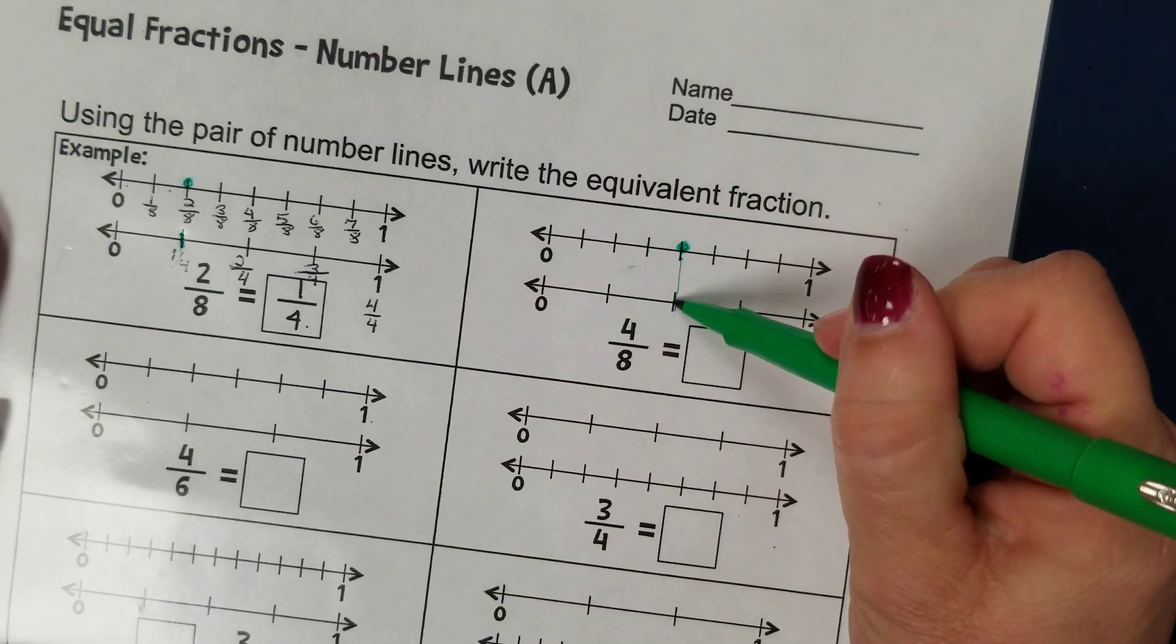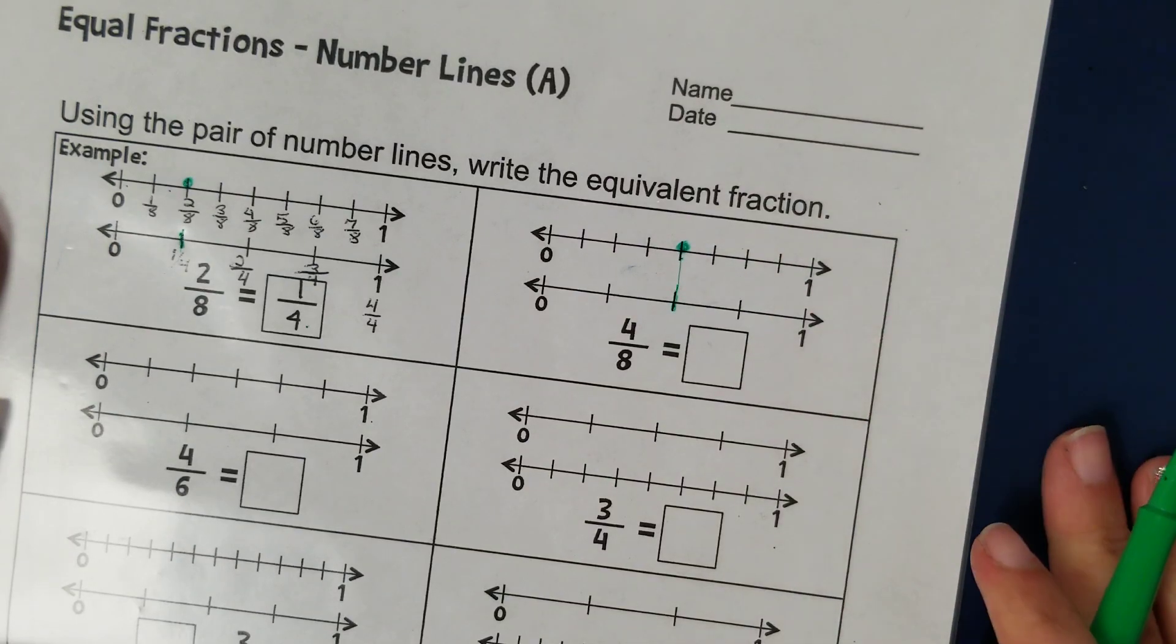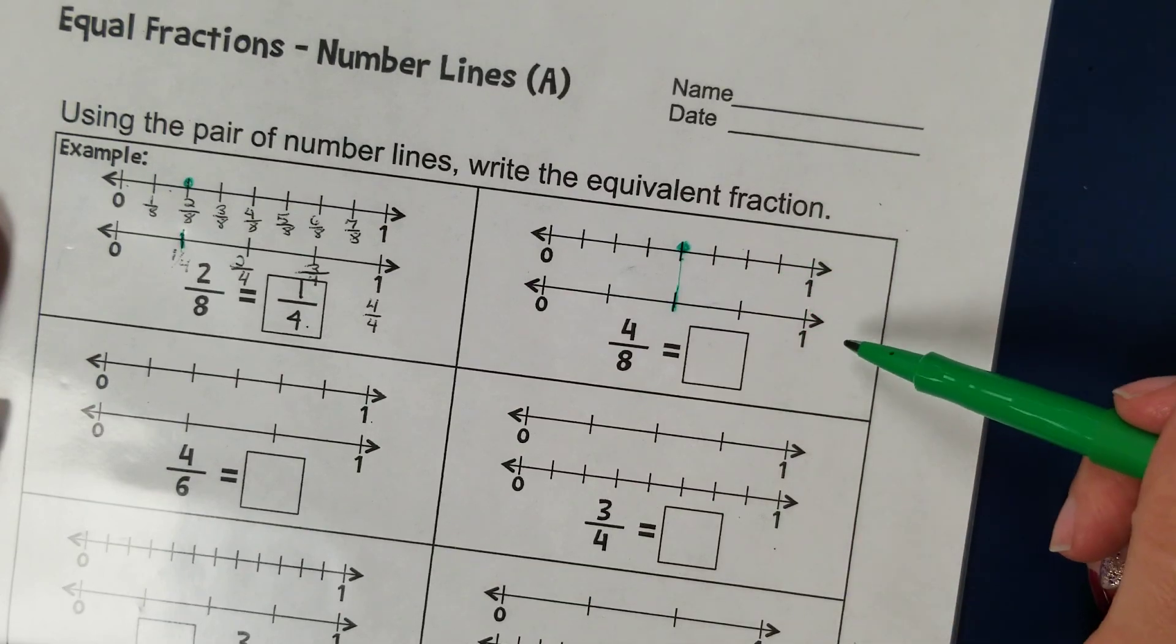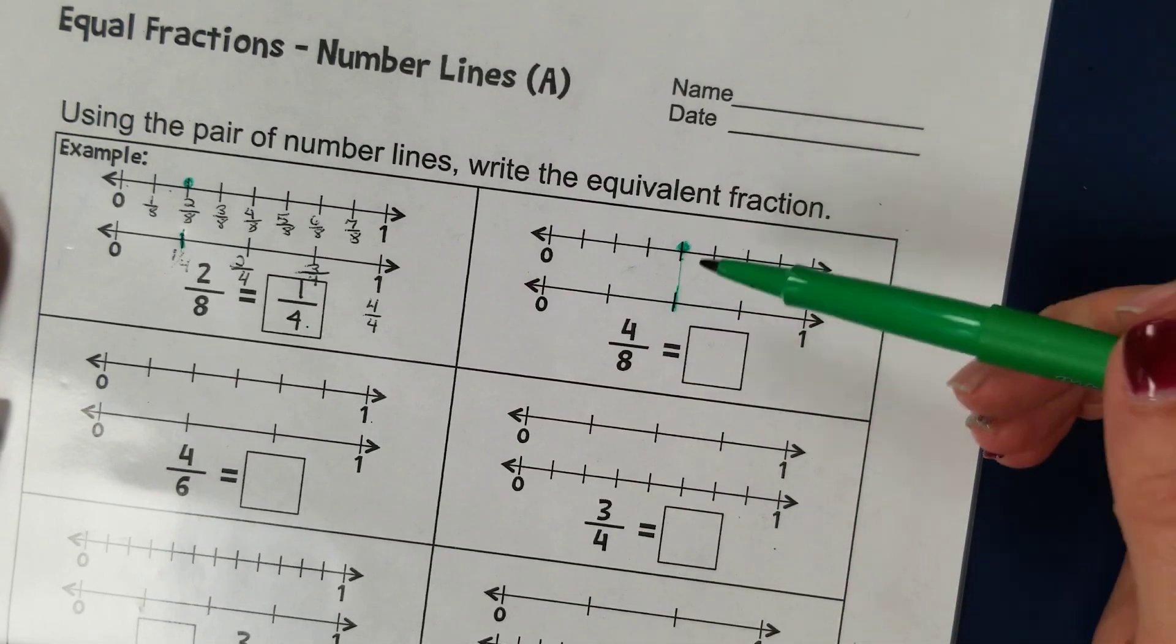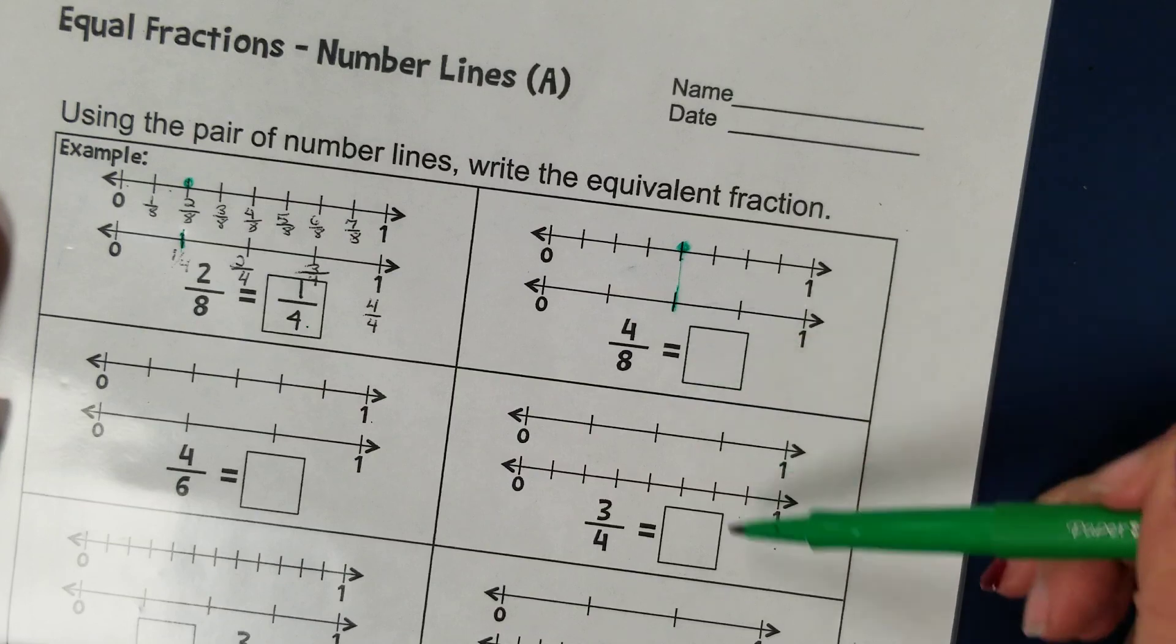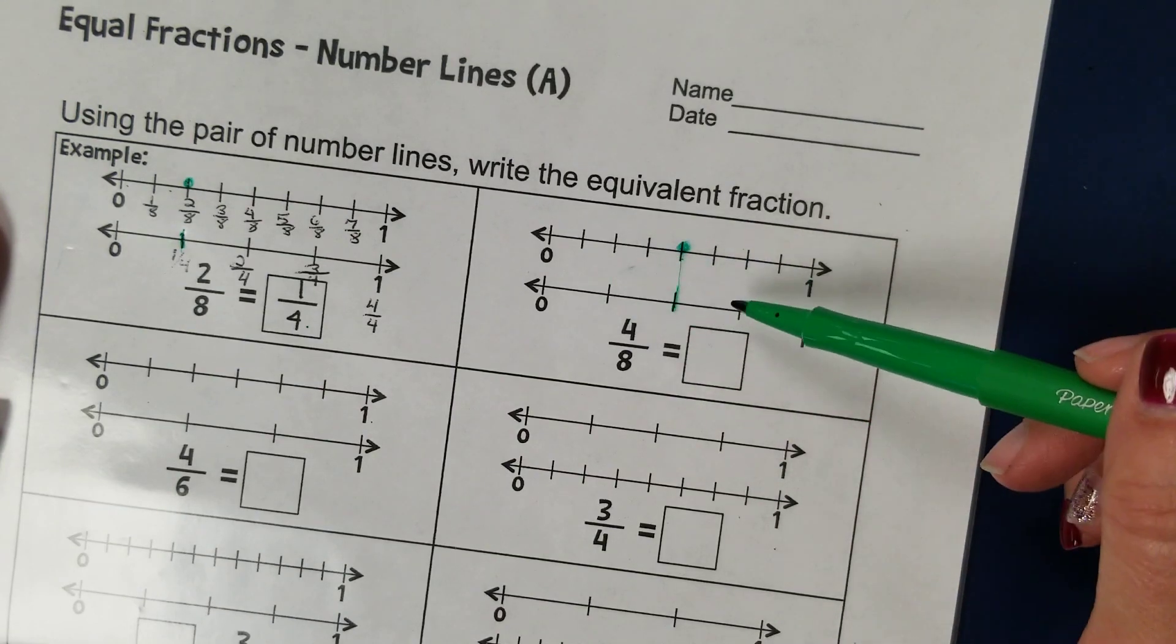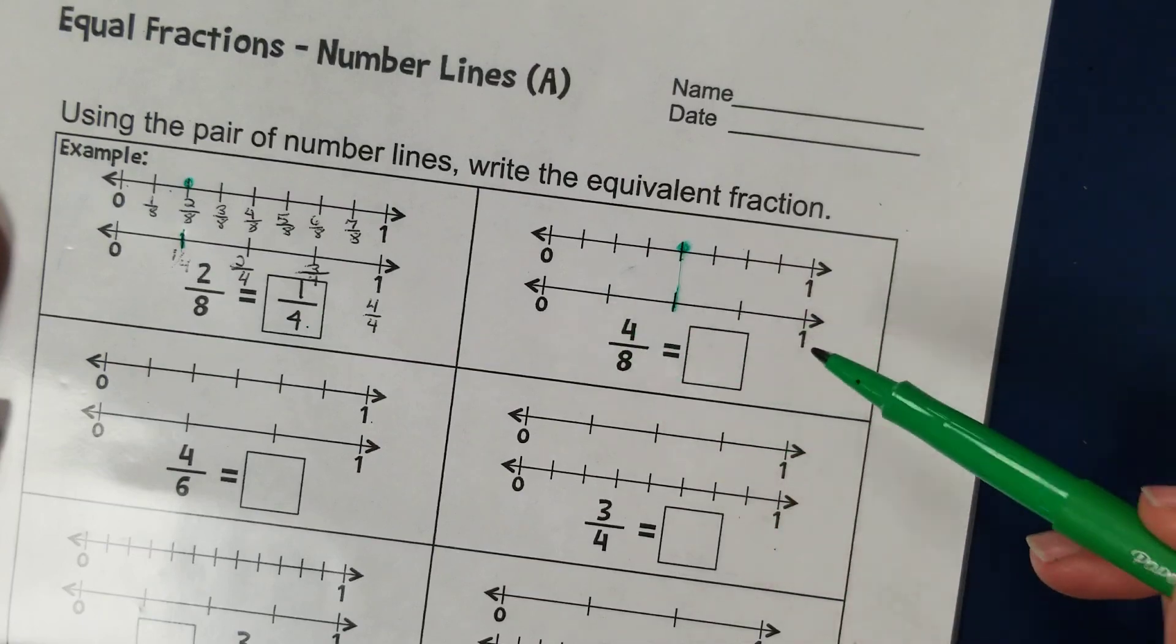So if I look down, I see that this line matches up perfectly. So looking now at the second number line, I first want to figure out what is my denominator going to be. So I count my parts. One, two, three, four parts in that one whole.